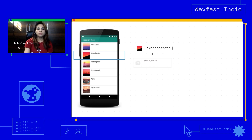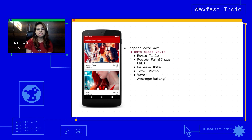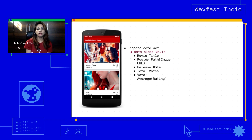Let's start implementing RecyclerView in our BookMyShow clone application step by step. Our first step is to prepare a dataset to display in each row. We'll create a data class called Movie with properties: movie name, poster URL, release date, total votes, and average movie rating. Right now we'll be fetching data locally, and later Sriyank will show how to get data from a server and display it in the RecyclerView.